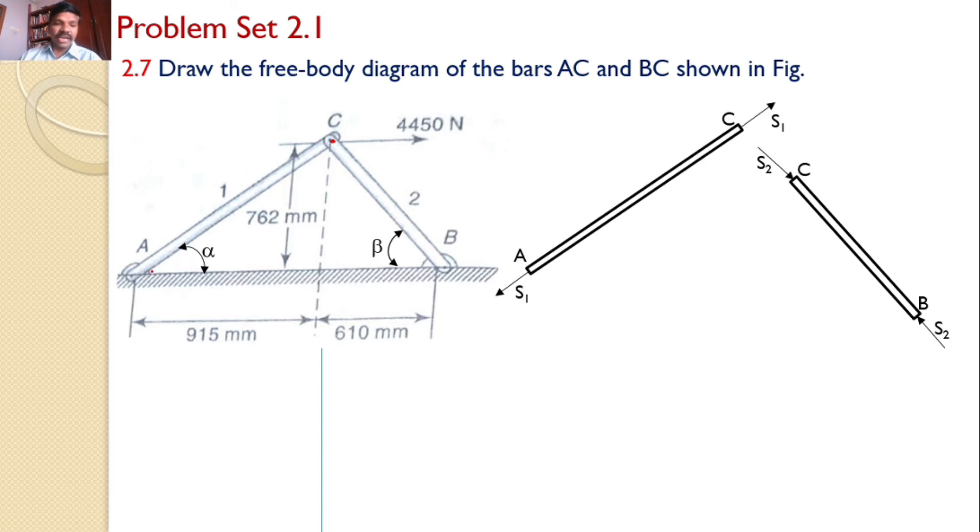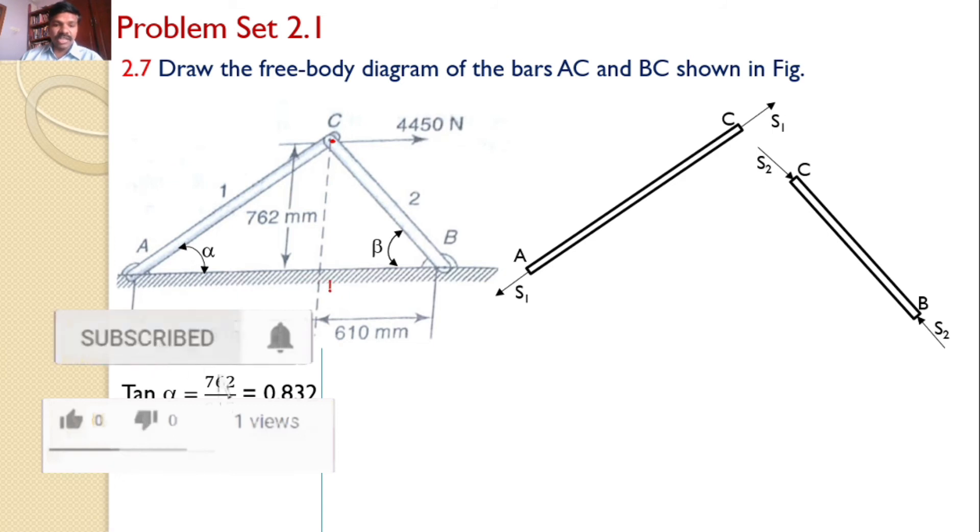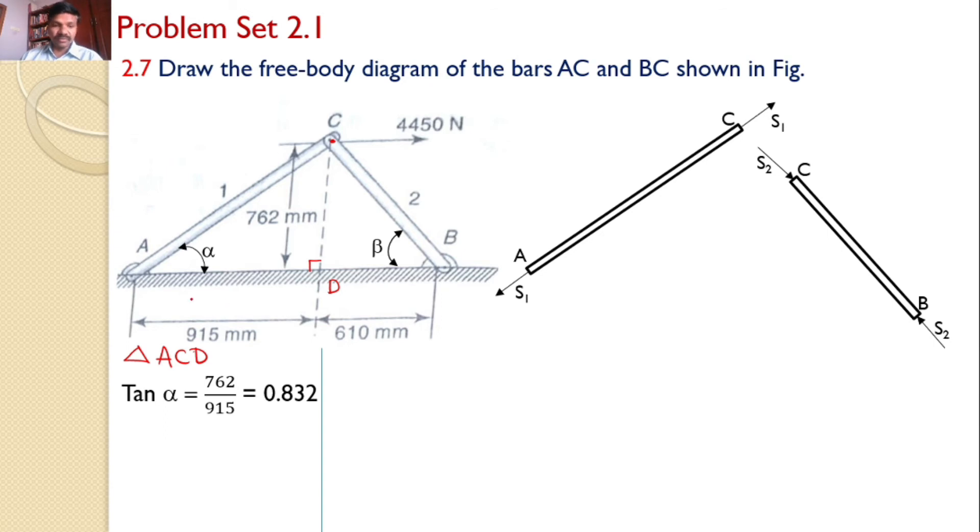Now from the right angle triangle ACD, let us put a name here D. So from the triangle ACD, this angle is 90 degrees. So from the right angle triangle ACD, tan alpha is equal to 762 by 915, which is 0.832, or alpha is equal to 39.79 degrees.